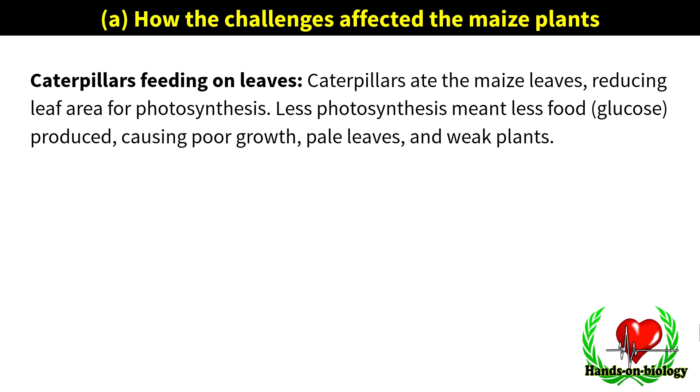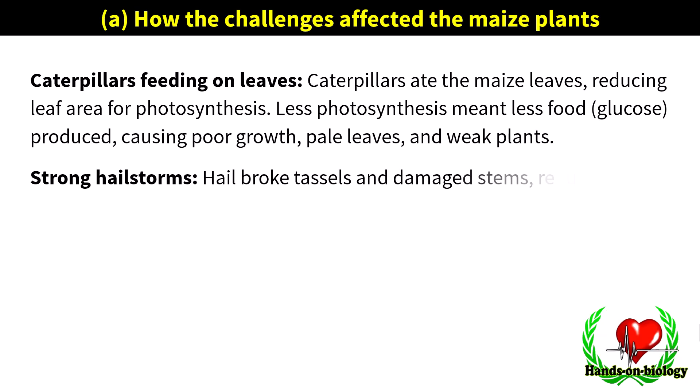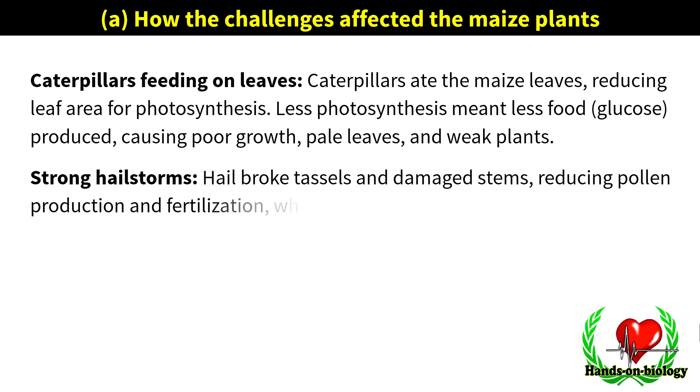Strong hailstorms: hail broke tassels and damaged stems, reducing pollen production and fertilization, which led to fewer cobs and lower yield.